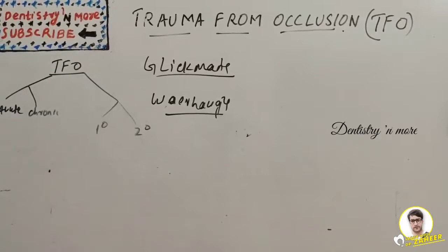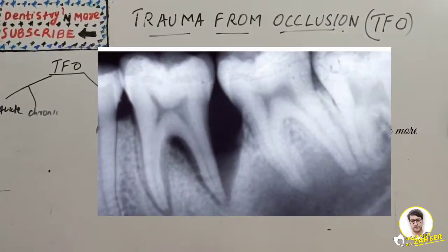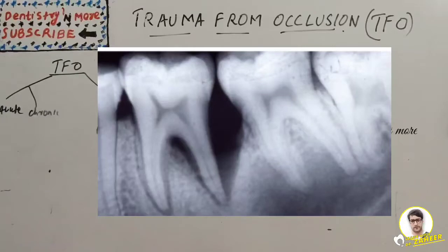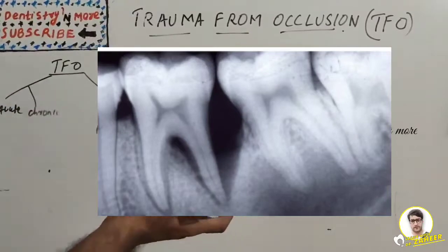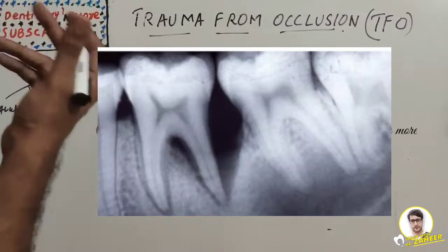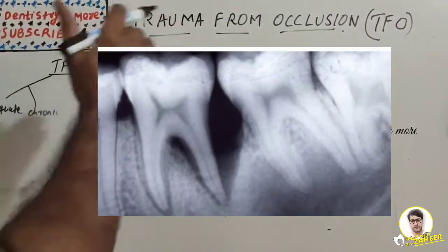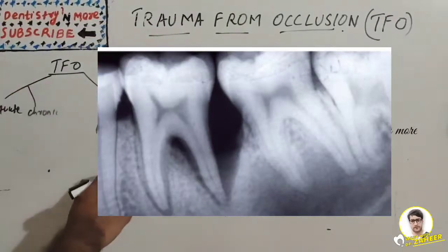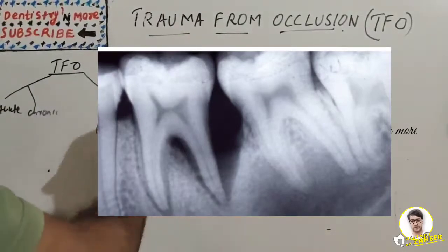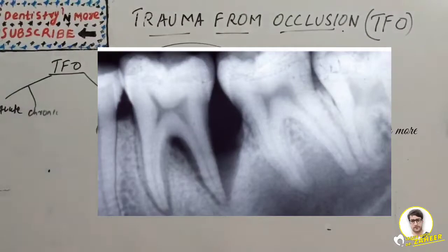Verhoekhz concluded that loss of connective tissue attachment and resorption of bone are exclusively the result of inflammatory lesion associated with subgingival plaque, with no role for TFO. Angular bony defects and infrabony pockets occur when subgingival plaque of one tooth has reached a more apical level than the microbiota on the neighboring tooth, and when the volume of alveolar bone surrounding the roots is comparatively large. The concepts of Verhoekhz and Glickman are entirely contradicting.